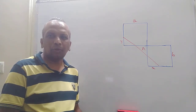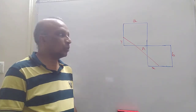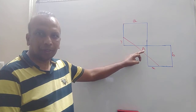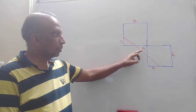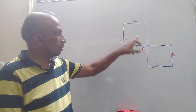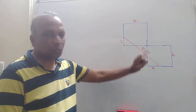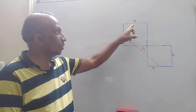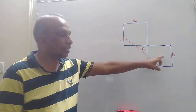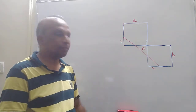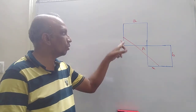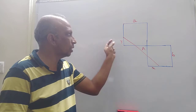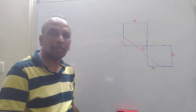Hello friends. I am going to explain this problem: to find the area A. This is given two squares. The side of one square is A and the other side is B. They are given X and Y here — this is the length X and this is the length Y.